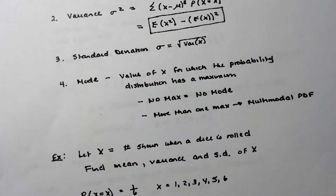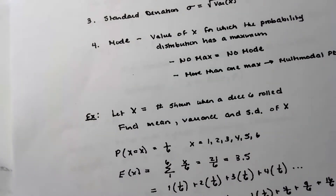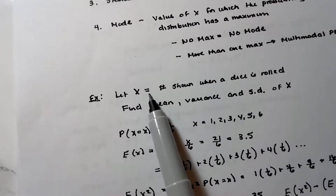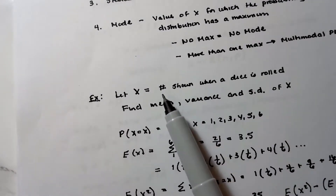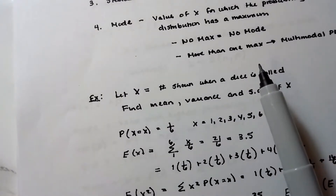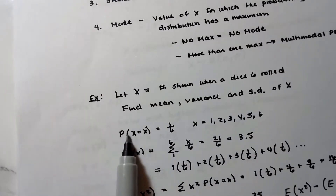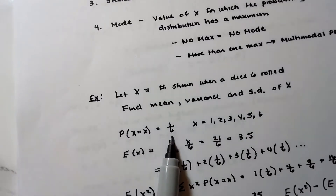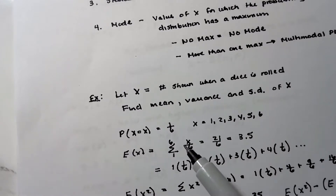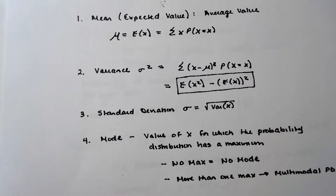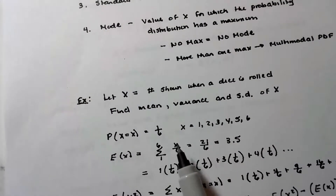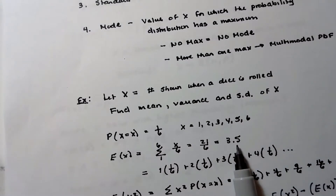Example: let X be the number shown when a die is rolled. X can take values 1 through 6. The probability that X takes on any specific value is 1/6. The expected value is just x times its probability — x times (1/6) — which gives 7/2 or 3.5.